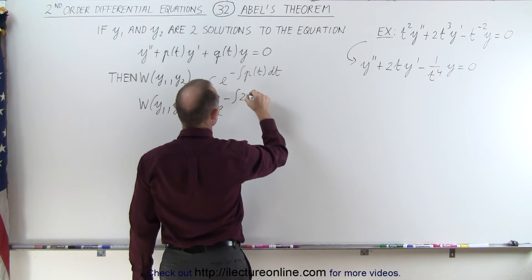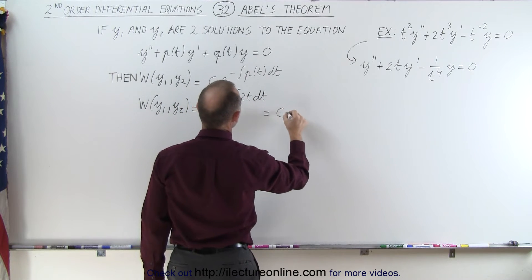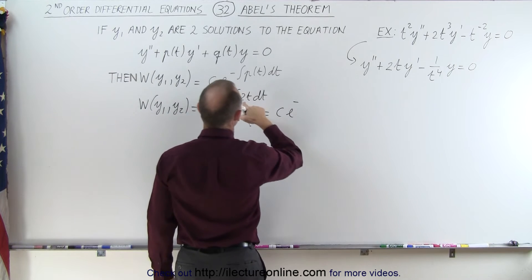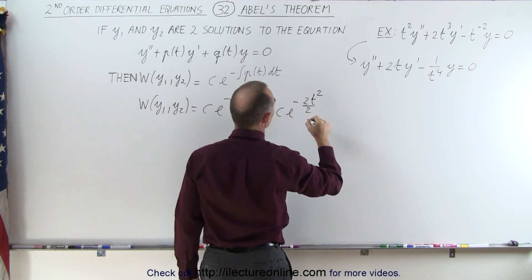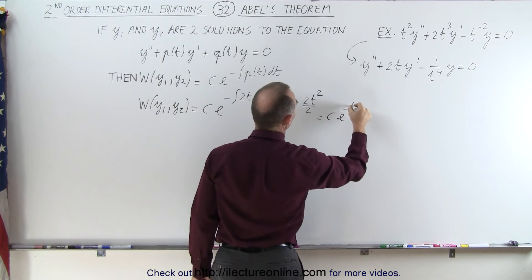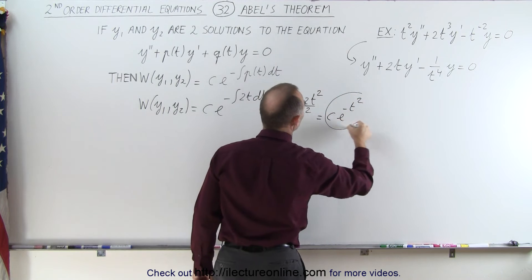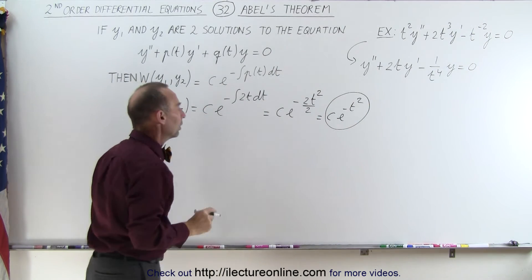and then if we integrate that, this is equal to c e to the minus. Now the integral of this would be 2t squared over 2 and those two's cancel out, which is equal to c e to the minus t squared. And this would be the Wronskian of the two solutions y1 and y2.